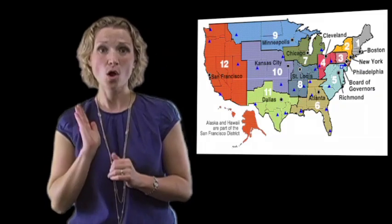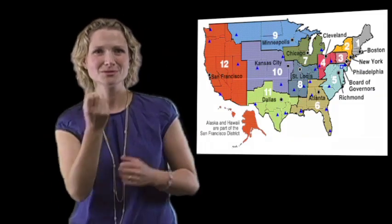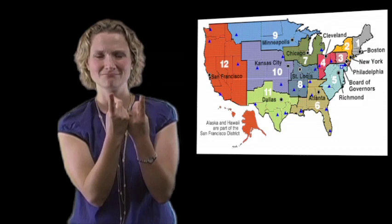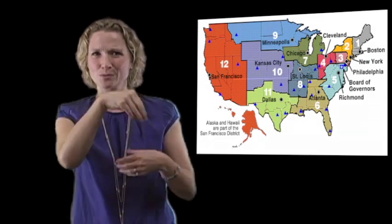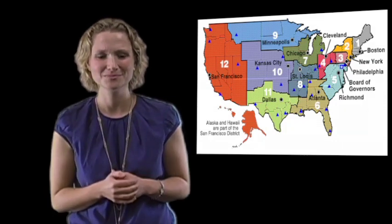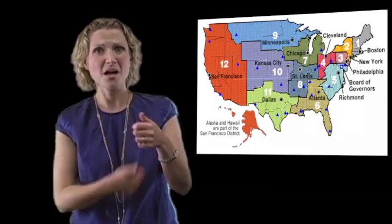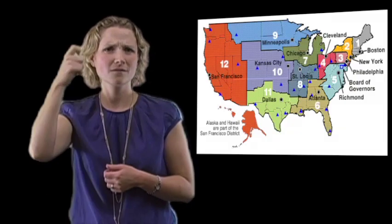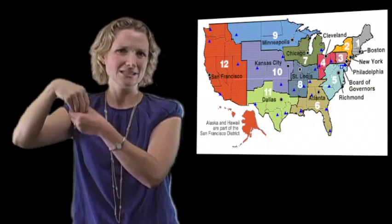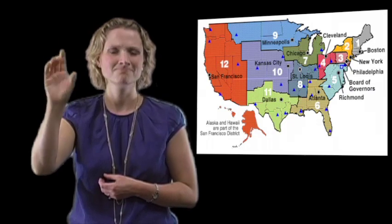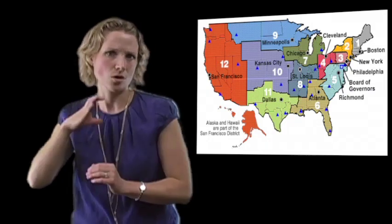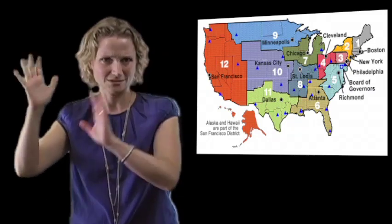Each district has an independently run bank, and here we are in District 12. The headquarters is in San Francisco, California. Above that is the Board of Governors, which is located and run in Washington, D.C. They work more closely with Congress and the President. Our 12th district includes the nine western states.